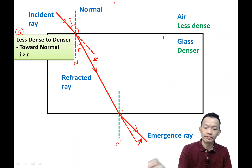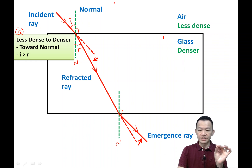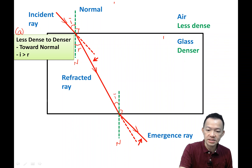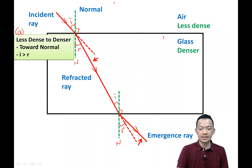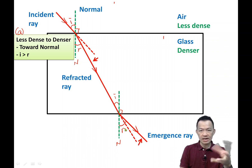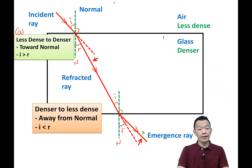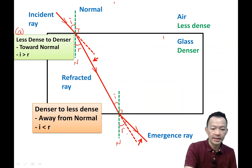The light comes out from the glass. This light ray is called the emergent ray. This is the second condition — when the light travels from a dense medium to a less dense medium, the light will be deflected away from the normal. And the angle of incidence I is smaller than the angle of refraction R, so I is less than R.